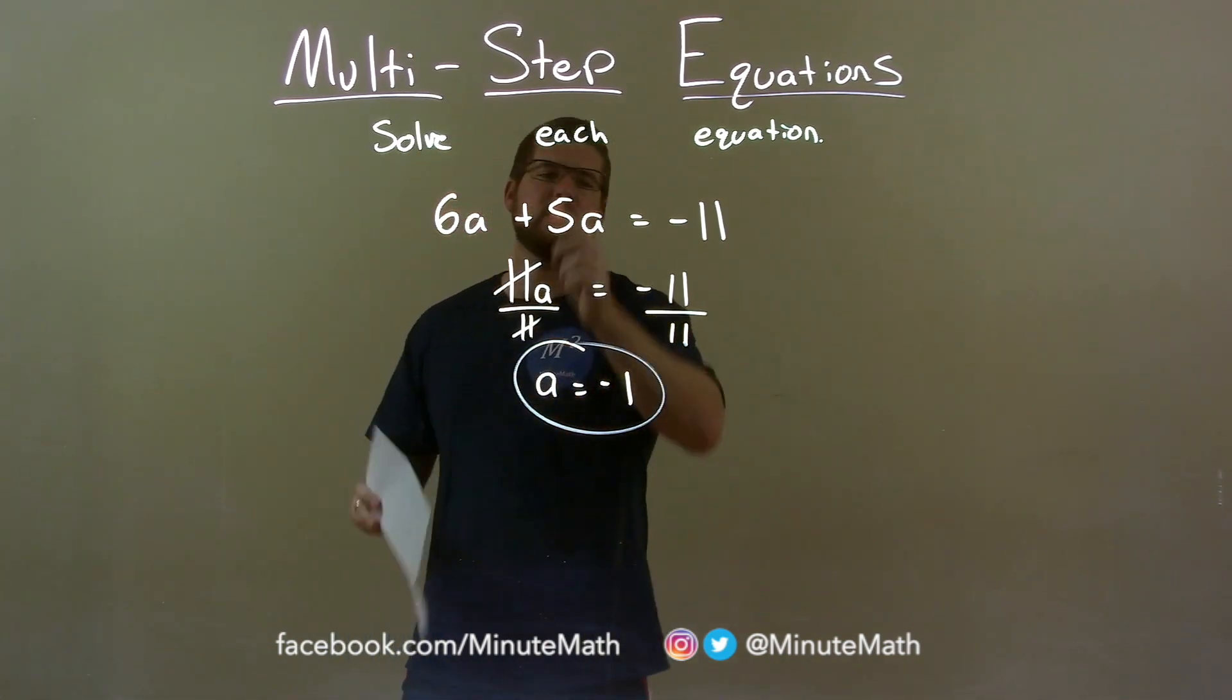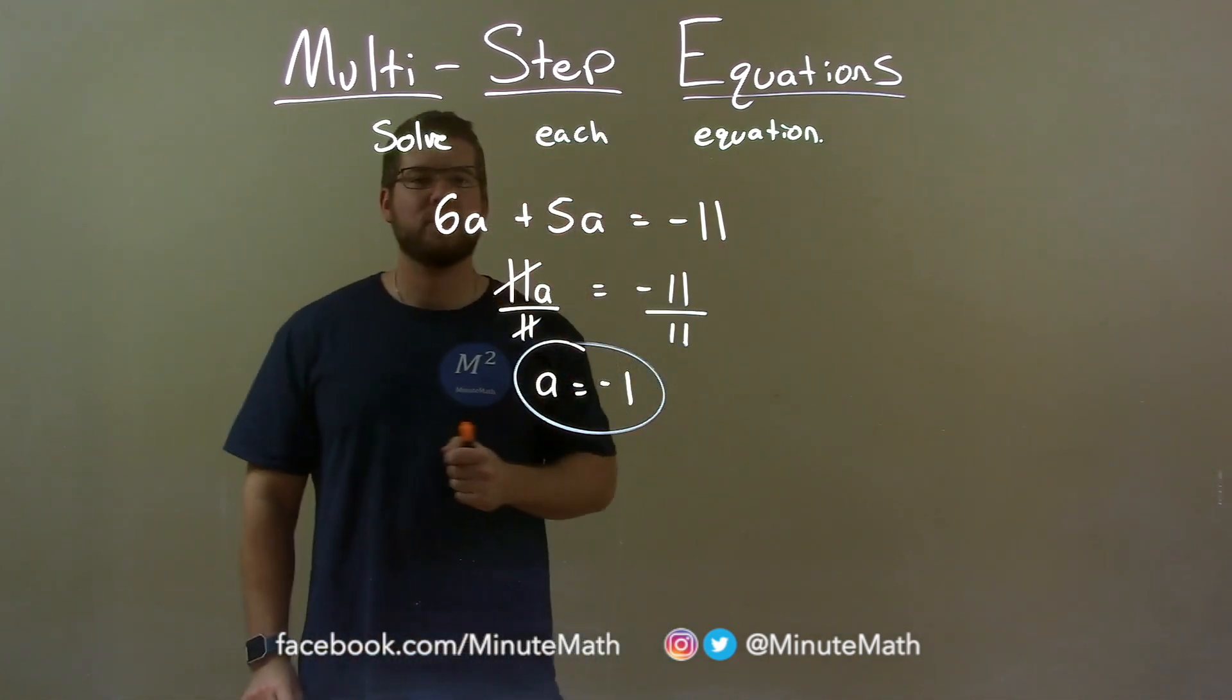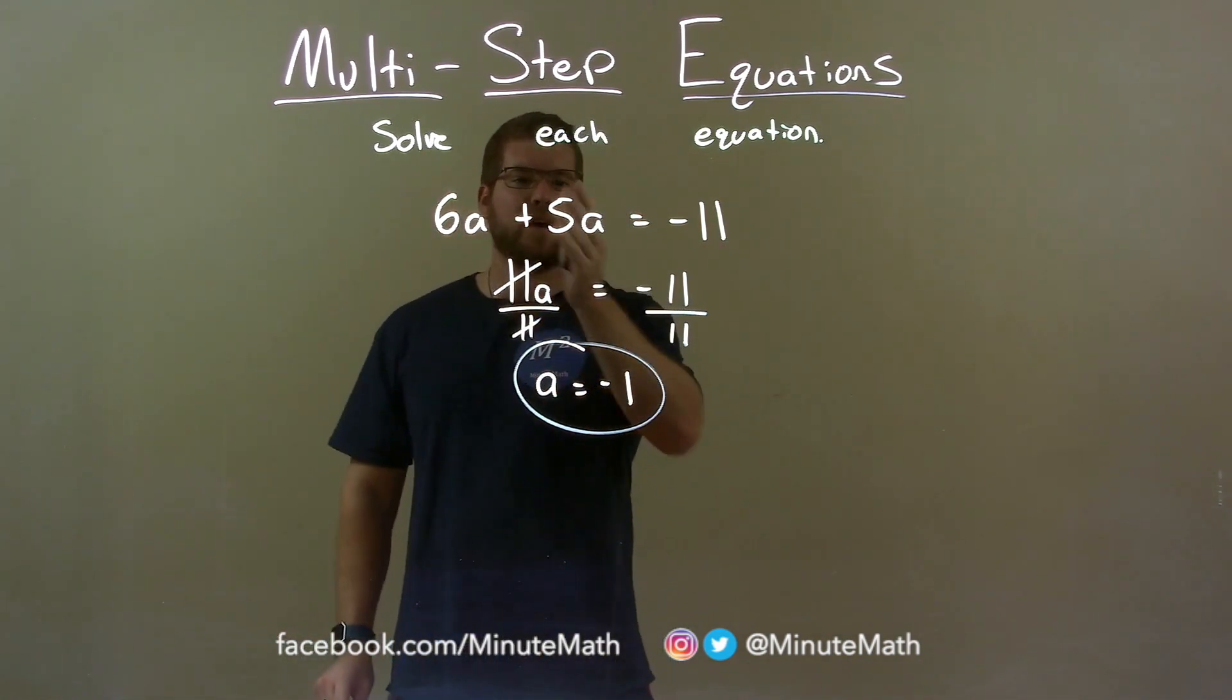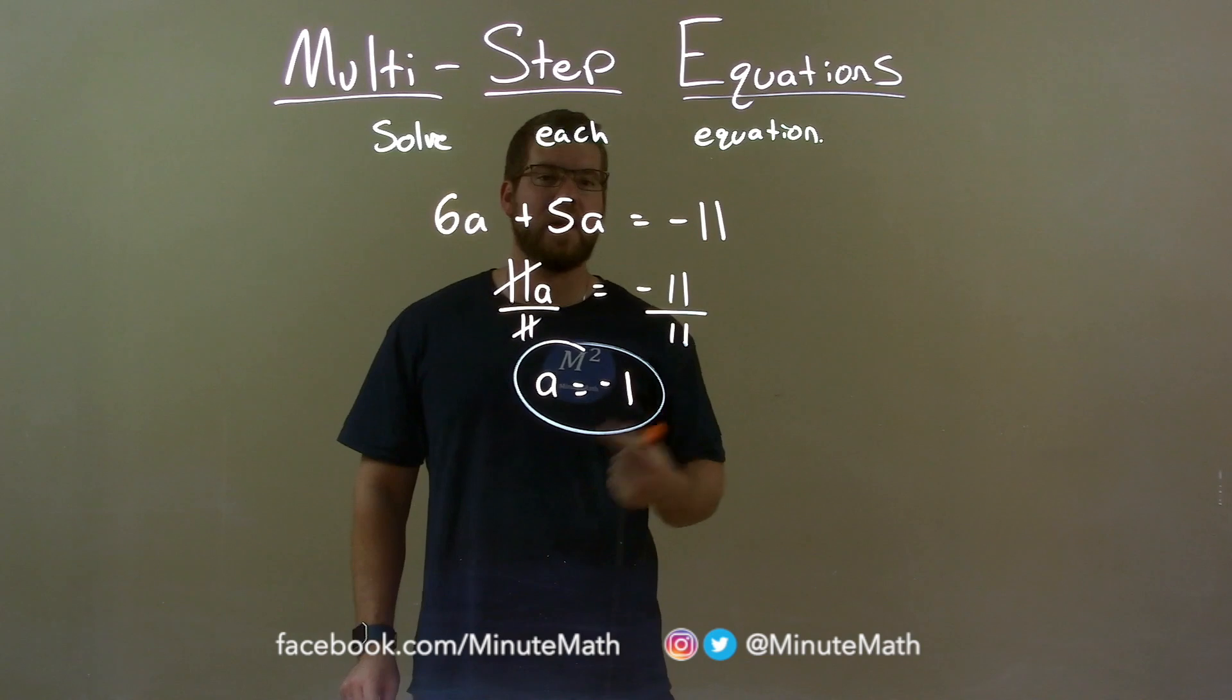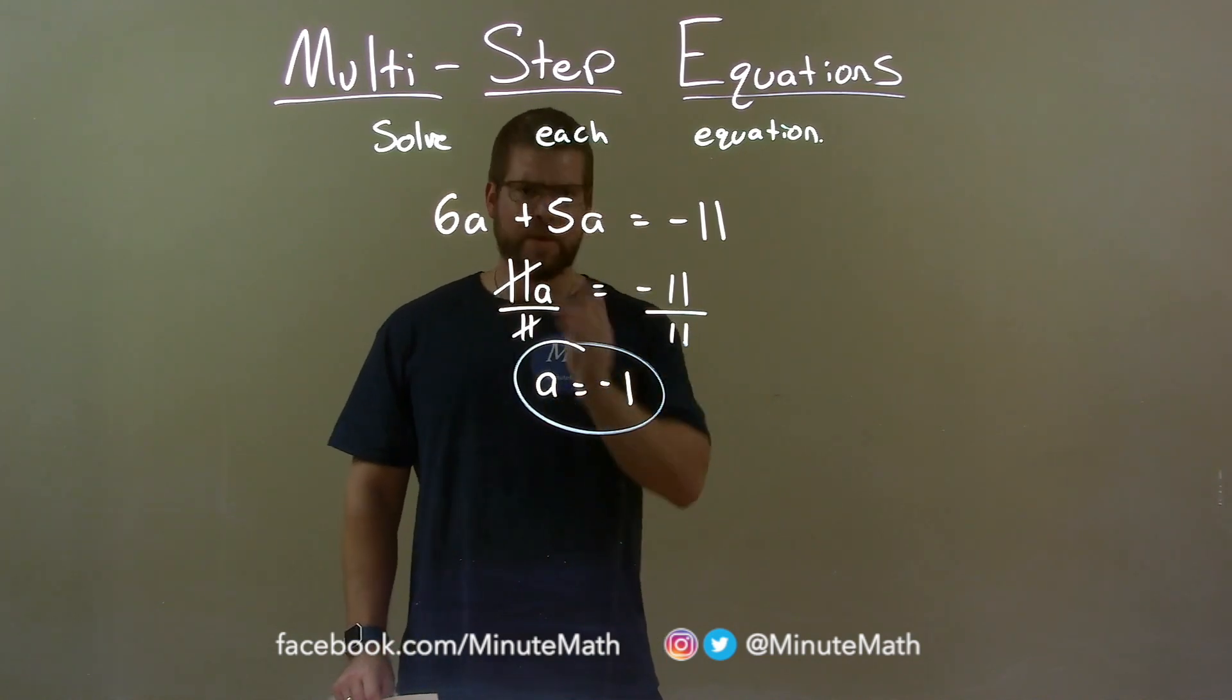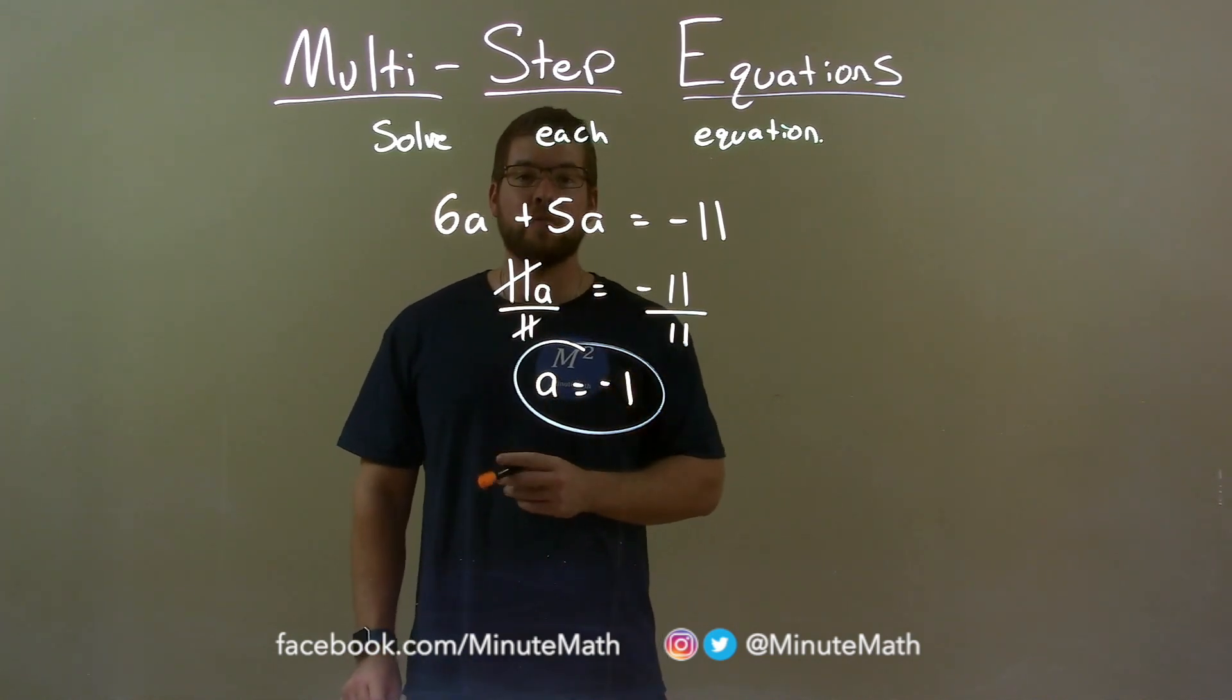Quick recap: we're given 6a plus 5a equals negative 11 and we solve for a. I added 6a and 5a together, then I divided both sides by 11, giving me a by itself equal to negative 1.